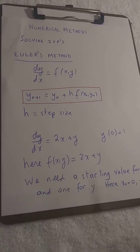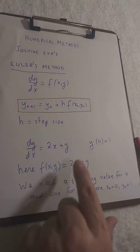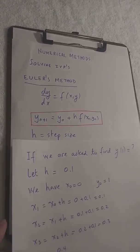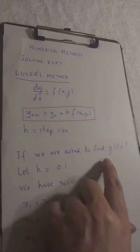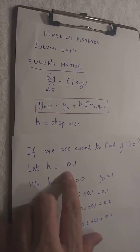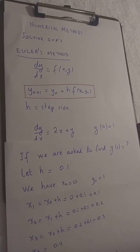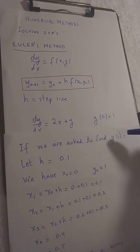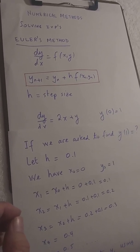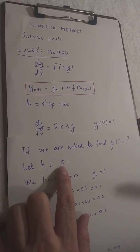Let's look at this IVP. They want you to find y of 1. If we're asked to find y of 1, let's take a value for h. I'm going to take 0.1, and here's what step size means. We are given y of 0 and we want y of 1. So to go from 0 to 1, I want to take 10 steps, which means the step size is 0.1.